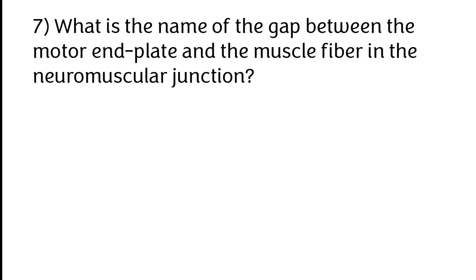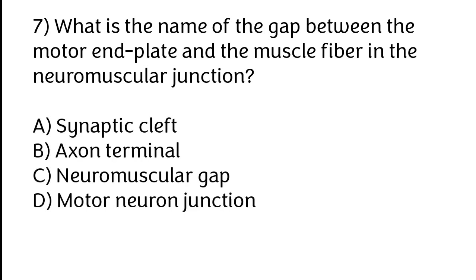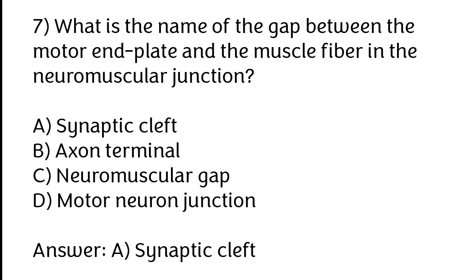What is the name of the gap between the motor nerve ending and the muscle fiber in the neuromuscular junction? Options: A) Synaptic cleft, B) Axon terminal, C) Neuromuscular gap, D) Motor neuron junction. The correct answer is option A, synaptic cleft.